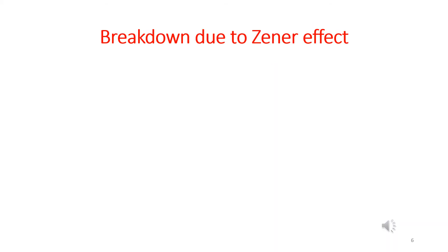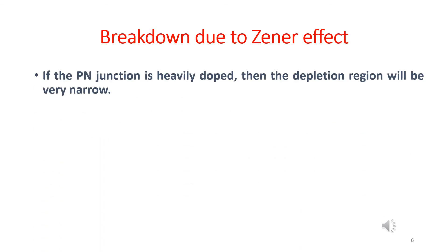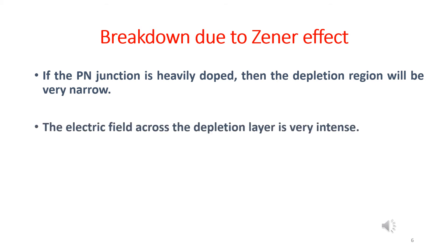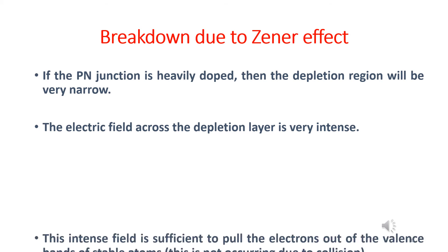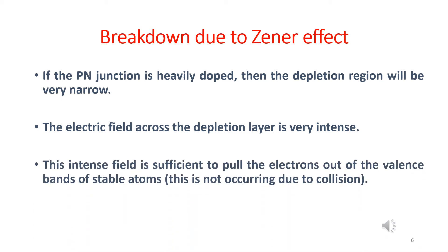Next, we will learn about breakdown due to the Zener effect. When a p-n junction is heavily doped, the depletion region is very narrow. So, under reverse biased conditions, the electric field across the depletion layer is very intense. Due to the narrow depletion layer and high reverse voltage, the electric field is very intense. This intense field is enough to pull the electrons out of the valence band of the stable atoms. Such a creation of free electrons is called Zener effect, which is different from the avalanche effect. These minority carriers constitute a very large current and the mechanism is called Zener breakdown. Please note Zener effect is not occurring due to the collision of carriers with atoms.